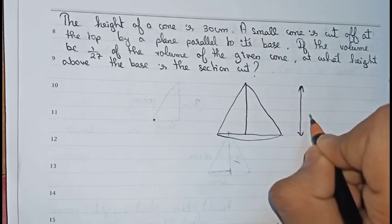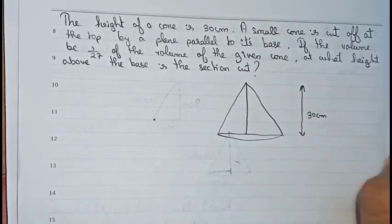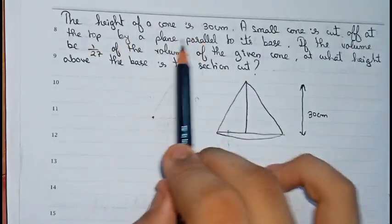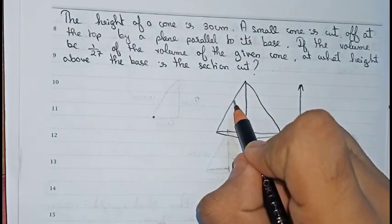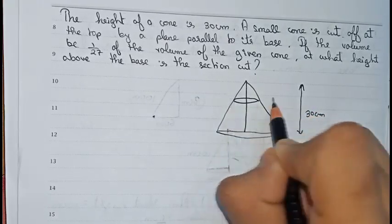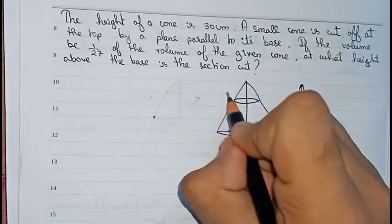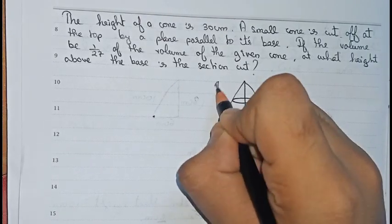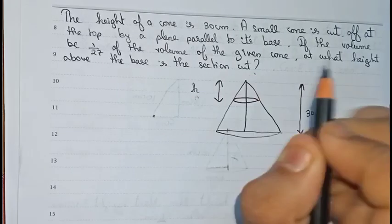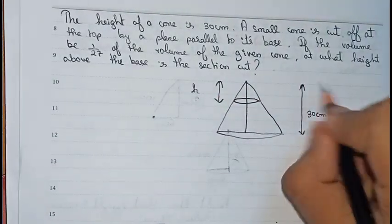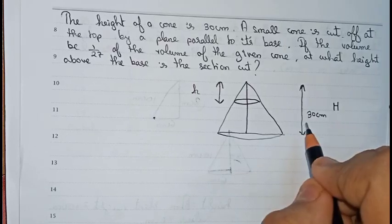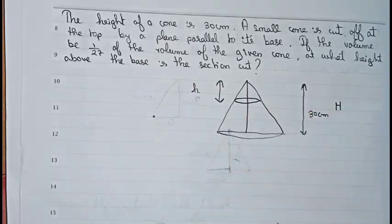It is given that a small cone is cut off from the top. So from this portion, a cone has been cut. This small cone will also have a height — we take that as small h. The full cone's height we take as capital H, and capital H equals 30 centimeters.